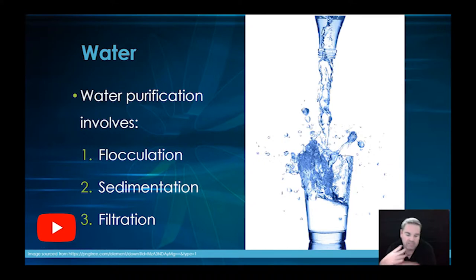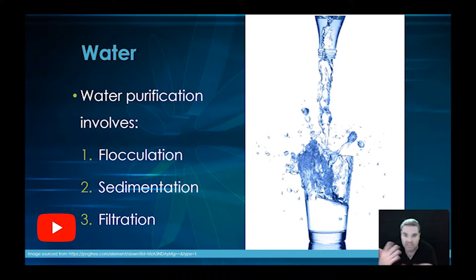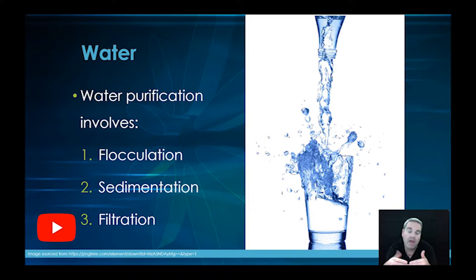The first step is always getting rid of the biggest things first and then working your way down to the smallest. They'll have big grates which stop large floating sticks, plastic bags and all those sorts of things from going into the water treatment plant, and from that they'll slowly start to work down through the size of the particles in the water to get rid of them.